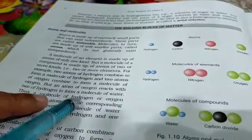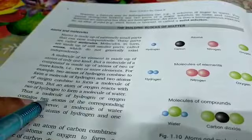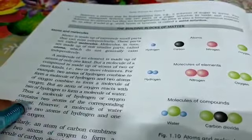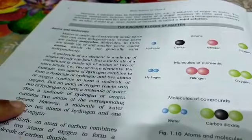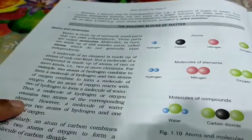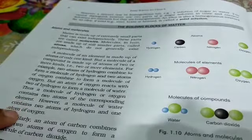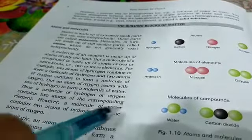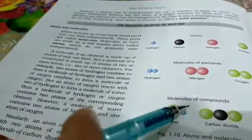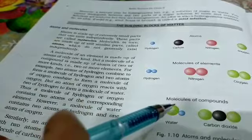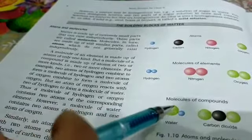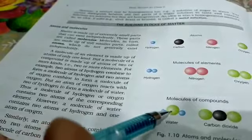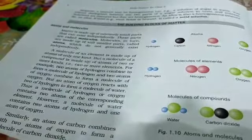A molecule of hydrogen and oxygen each contains two atoms of the corresponding element. तो आपने यहाँ पर देखा कि oxygen और hydrogen के जो molecules हैं, उनमें कितने atoms हैं? Two. A molecule of water contains two atoms of hydrogen — जैसे कि आप देख सकते हैं, water molecule में दो hydrogen और एक oxygen होता है।